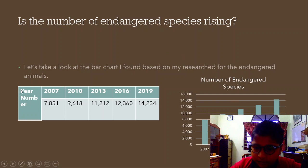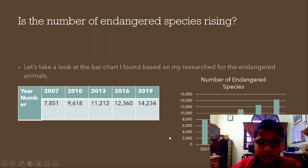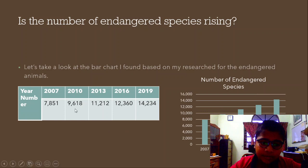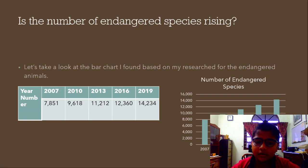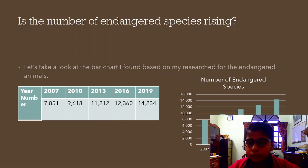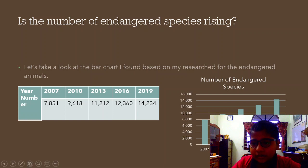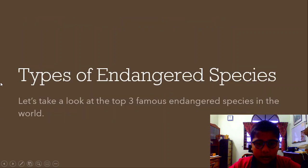You can see here the year and the number of animals going extinct. In 2007, there were only 7,851 species going endangered. That number raised up until 2019, when there were 14,234 endangered species. I think it's because humans are building more and more buildings. We also need a place to stay, but let's try to limit the number of buildings. Singapore, for example, helps take care of their environment and cares about animals.